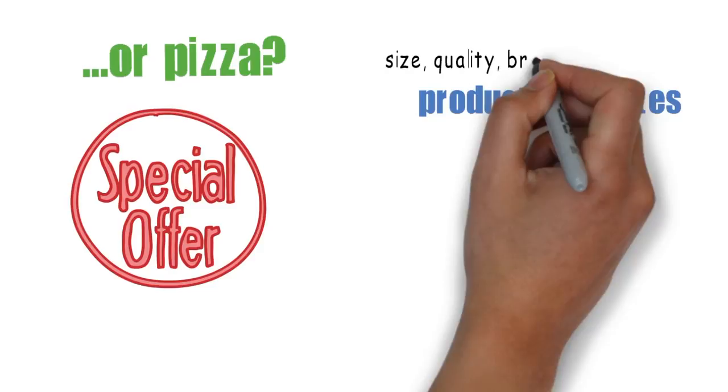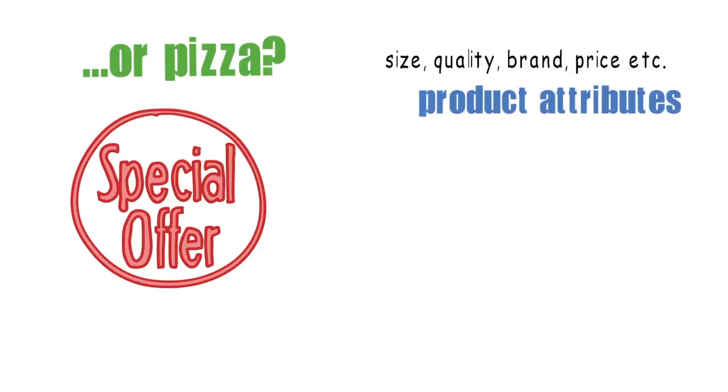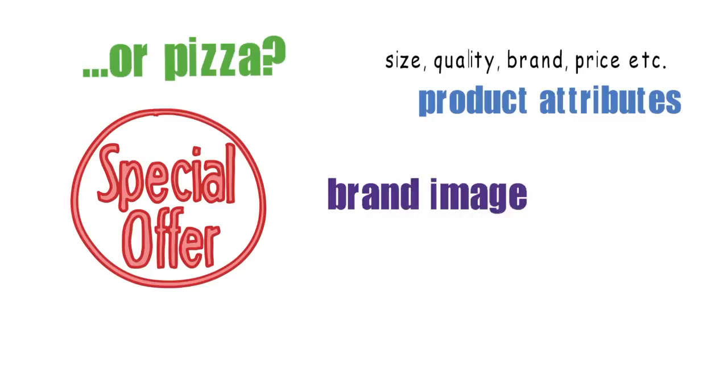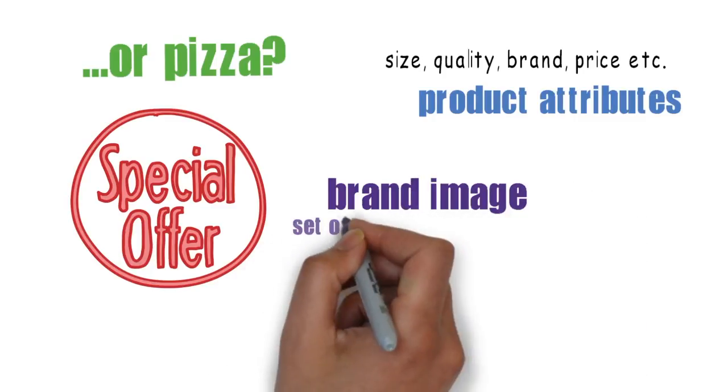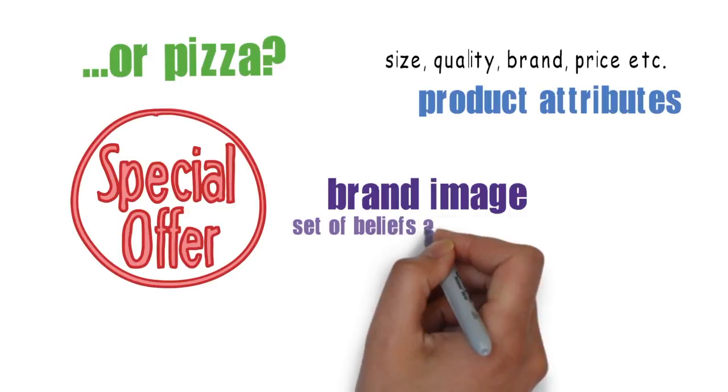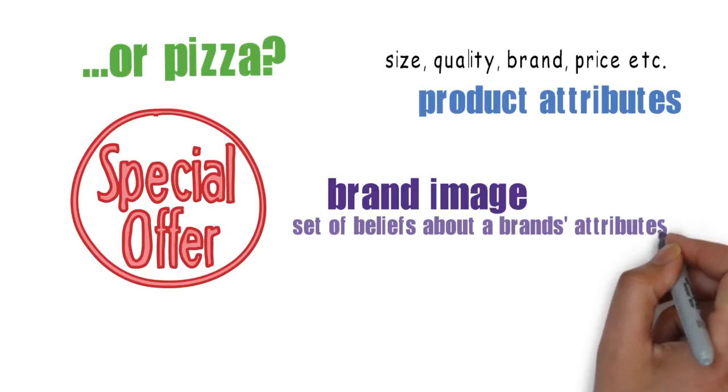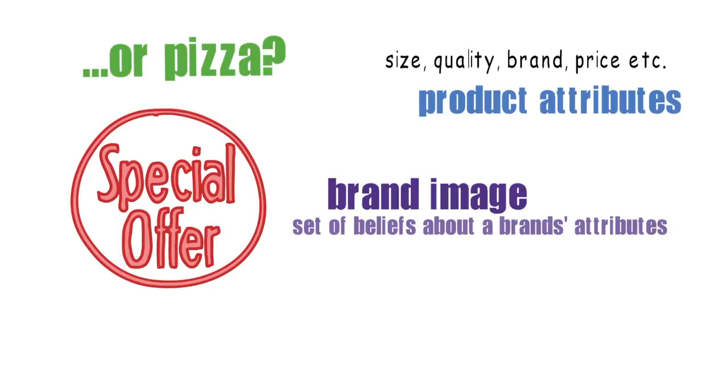Various attributes of the product such as size, quality, brand, and price are considered at this stage. Consumers will attach different degrees of importance to each attribute. Brand image, that is the set of beliefs that consumers hold about a particular brand, plays an important part here. Consumers develop a set of brand beliefs about where each brand stands on each attribute and evaluate brands according to such beliefs.